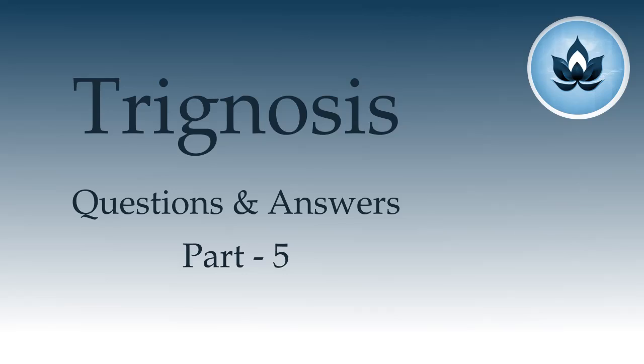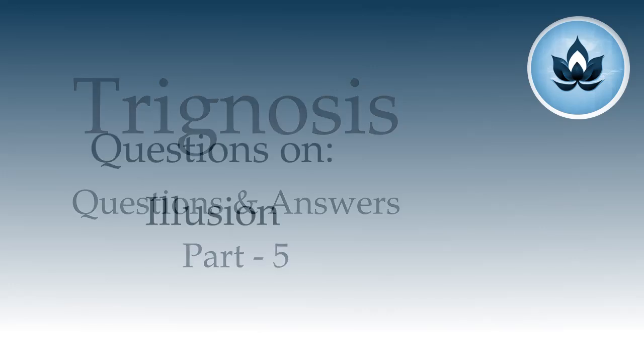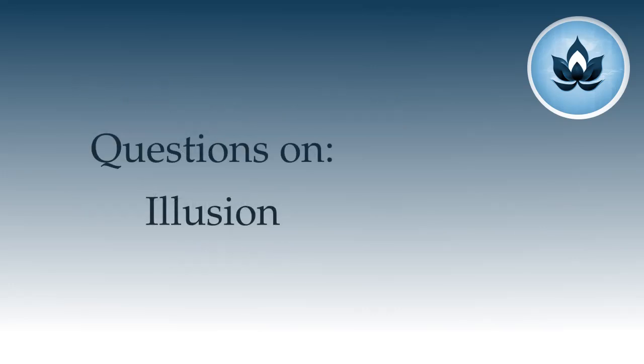Welcome back to the series on questions and answers on the triagnosis program. Today we'll take some questions on the topic of illusion. This was introduced in the triagnosis program, although not very thoroughly, but a broad idea was given. What is illusion? How to find out if something is illusion? What kind of rational and logical process is used to determine what is an illusion, and justification for it?